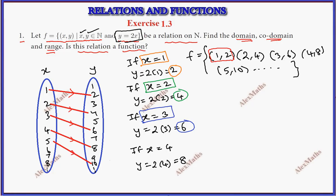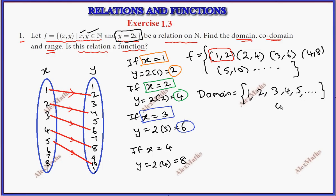Find the domain: the domain consists of the x values, which are the first elements: 1, 2, 3, and so on — the set of natural numbers.